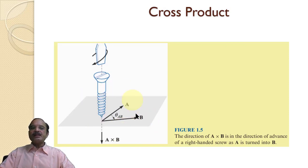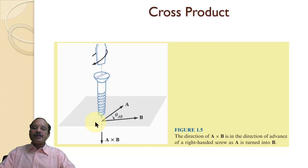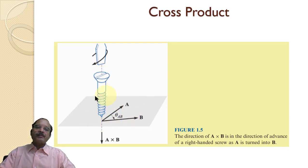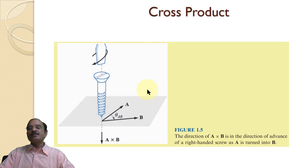If I use a right-handed screw, that gives me the direction of the cross product between two vectors a and b. Here, if I want to take the cross product between vector a and b and rotate this vector in the clockwise direction — if it is a right-handed screw, by rotating this right-handed screw it will go downwards. So the direction of the cross product is in the downward direction, and this gives me the direction of the cross product.